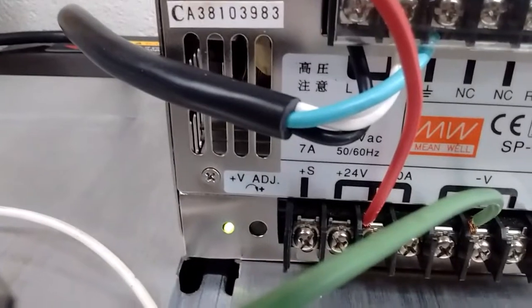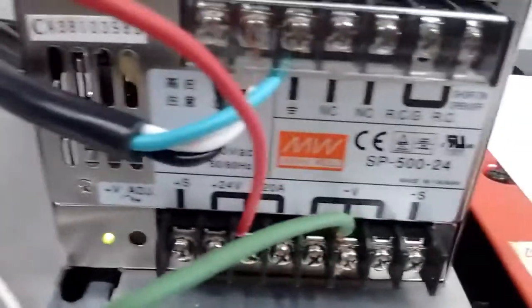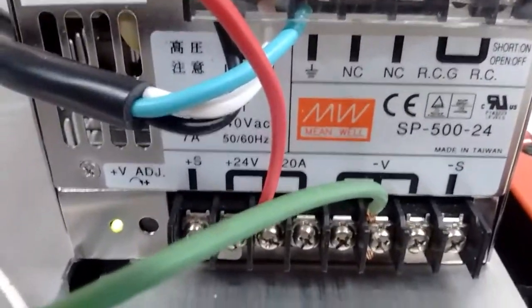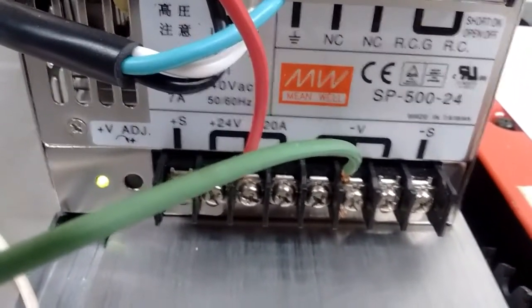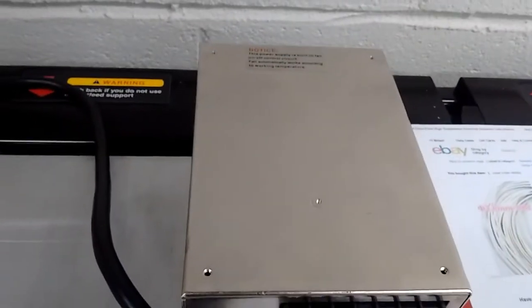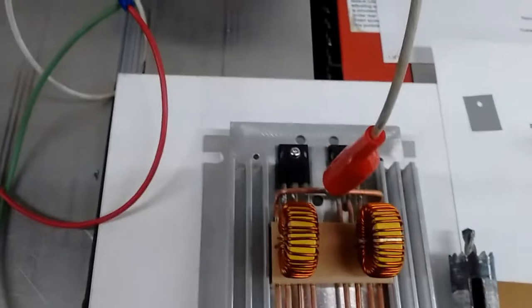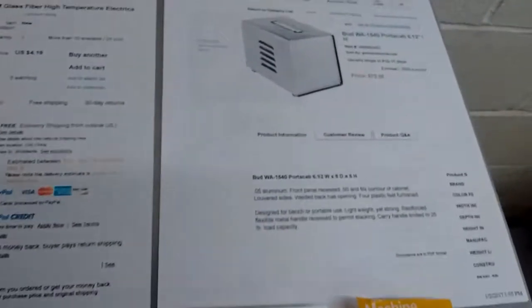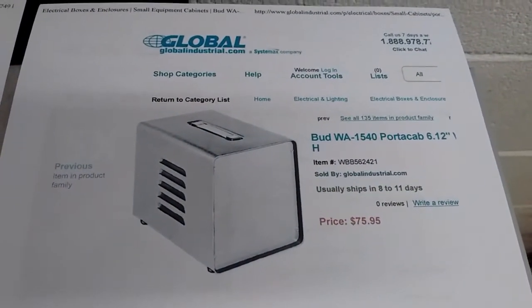This is a 24 volt 20 amp power supply, an SP500-24. I bought this on eBay for $31 used. This is exactly the right size on top for the heatsink that I'm using on my board, and it can be screwed on when complete.